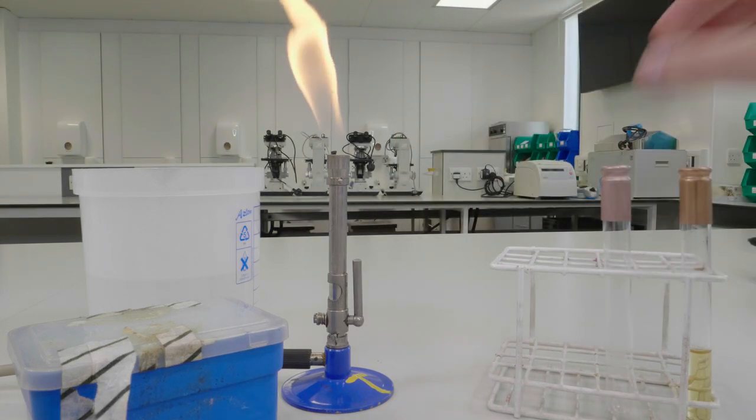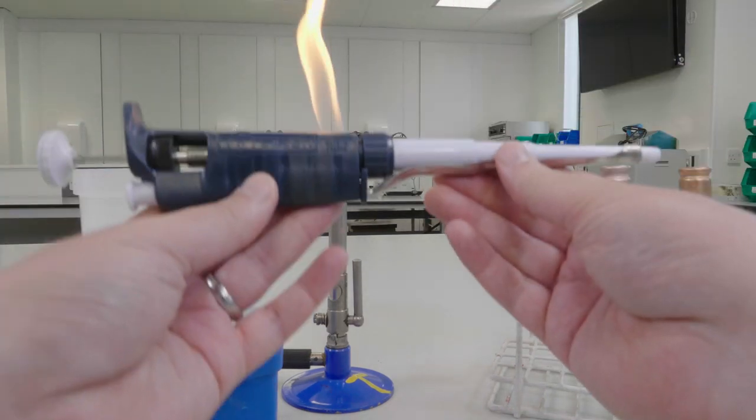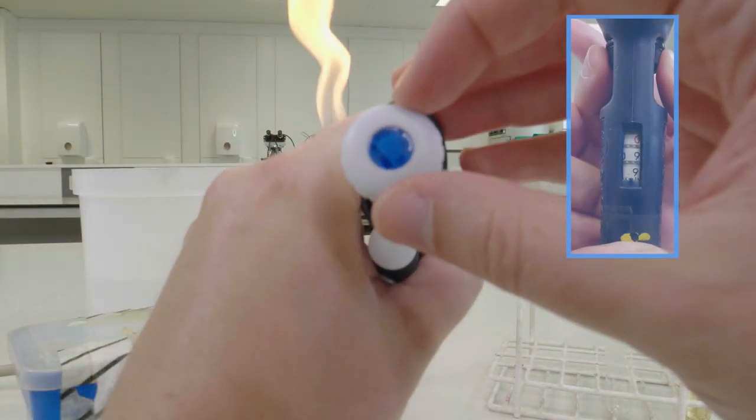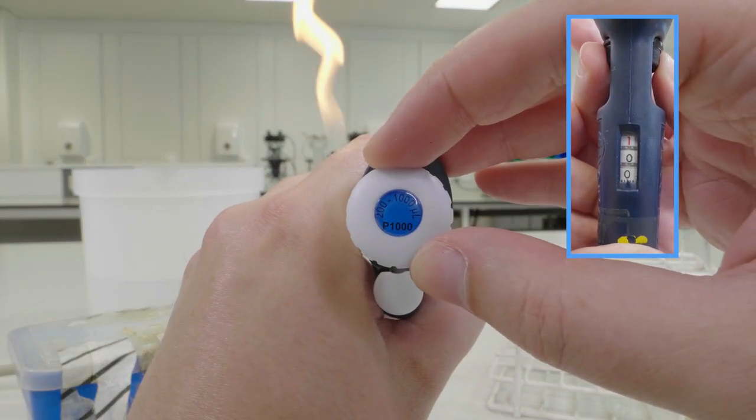For this method you will need a P1000 pipette which can be found at the end of the bench. You should set this to dispense 1000 microlitres.